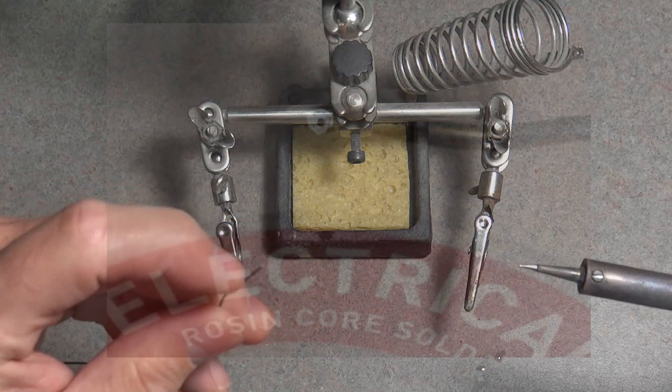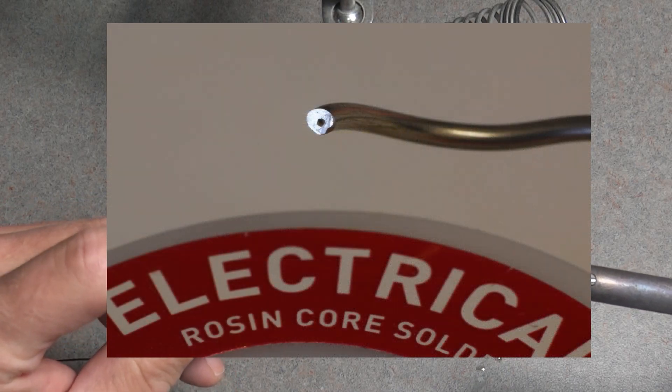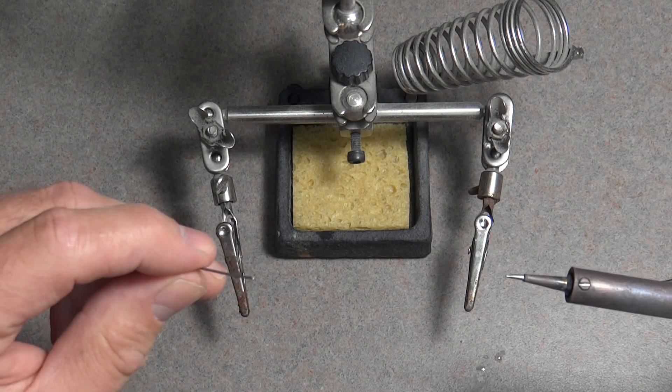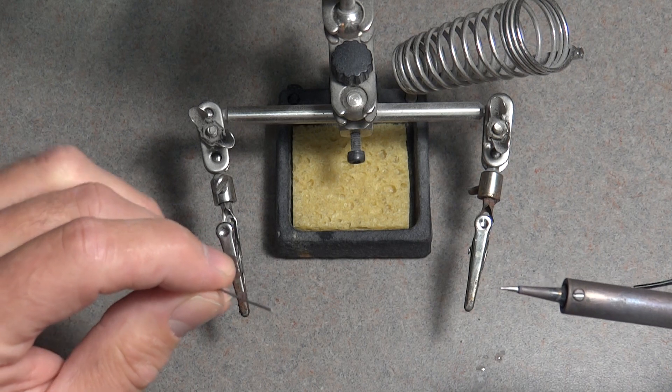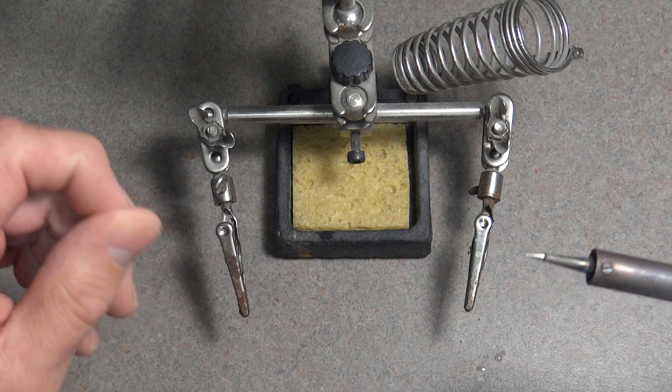Flux is found in the center part of the soldering wire and is there to help clean and remove oxidization from the surfaces to be soldered. This makes for an even better connection.